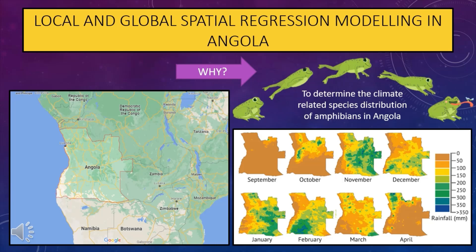To give a brief intro to regression modeling, it can be best described as a statistical method that predicts the value of a dependent variable based on a known independent variable. When data of a spatial nature becomes involved, regression modeling becomes slightly more complicated as assumptions made by linear regression modeling are most often violated. This is largely as a result of Tobler's first law of geography, which states that everything is related to everything else, but near things are more related than distant things.